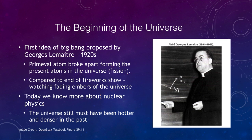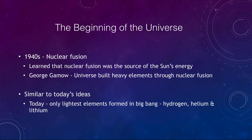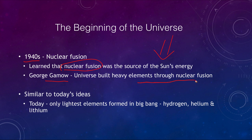More recently, in the 1940s, nuclear fusion was beginning to be understood — we had learned that nuclear fusion was the source of energy for the Sun. George Gamow said that the universe built the heavy elements through nuclear fusion, just as happens in stars. This is relatively similar to ideas we have today, except now we say that only the very lightest elements — hydrogen, helium, and maybe small amounts of lithium — formed in the Big Bang, and all heavier elements formed within stars.